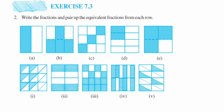First, we're going to write the fraction for each figure. The first one has two equal parts and only one part is shaded, so the fraction is 1 upon 2. The next one has six equal parts, out of which four are shaded, so it's 4 upon 6. The next has nine equal parts, out of which three are shaded, so the fraction is 3 upon 9.